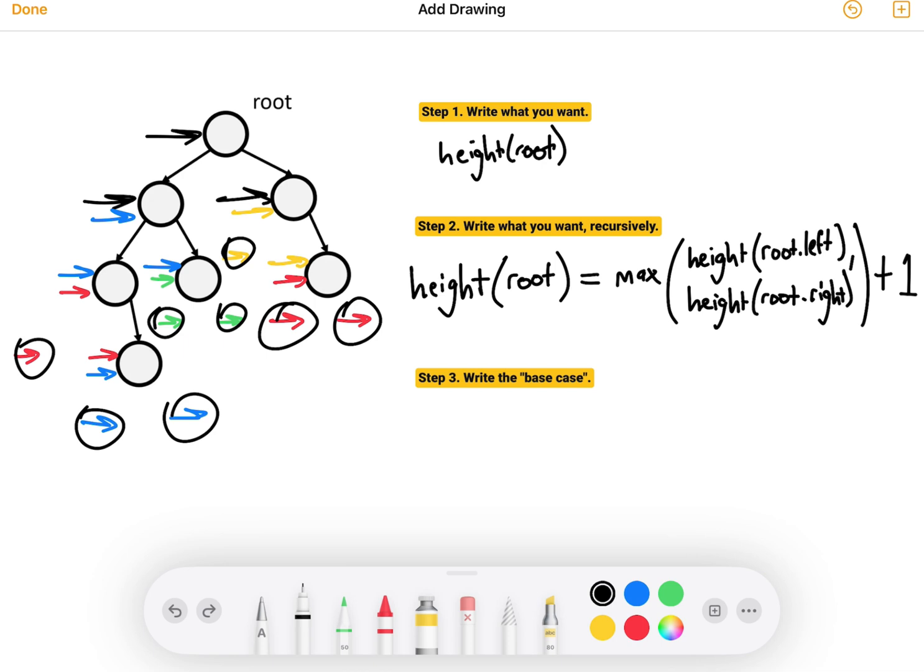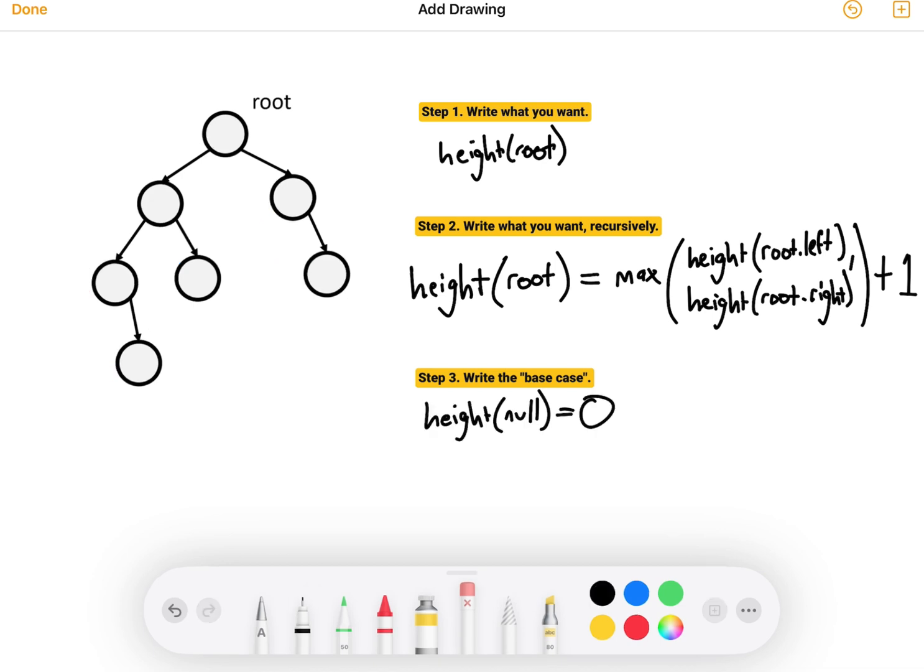We have to tell the computer to manually set height of null to something. Well, if the height of one node is one, then the height of no nodes should just be zero. So, amazingly, once you have these two things, the recursion and the base case, you've actually solved the whole problem, and you can just code this up.